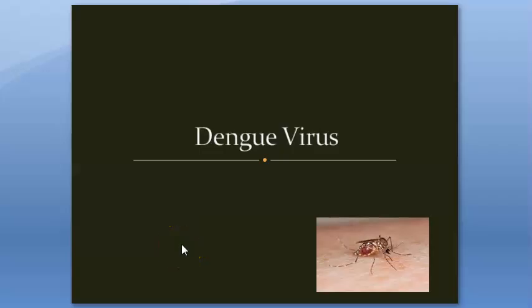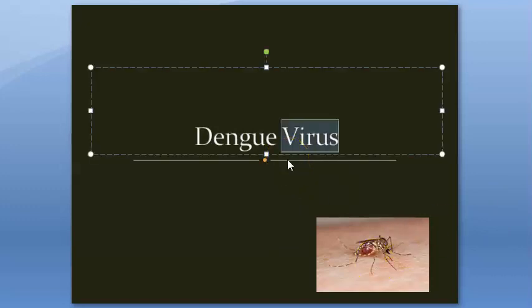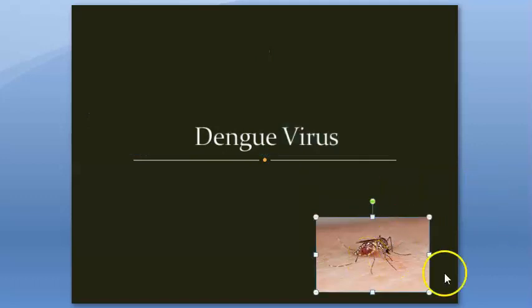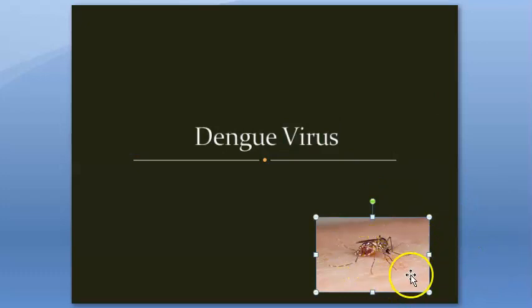Welcome. In this video we want to look at dengue virus — you can call it dengue or dengue virus, your choice. Dengue is caused by a virus, not by the mosquito directly. The mosquito is just the vector. It is the Aedes mosquito, which when it rests on a surface will be parallel to the surface.